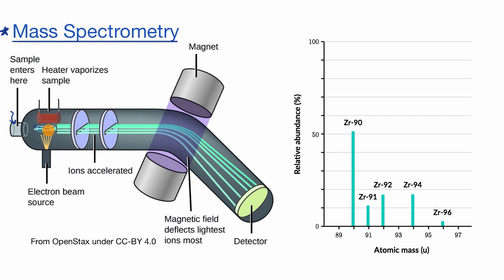And by ionizing some of your atoms, they now have charge. And because they have charge, they can be accelerated through these electric plates. So now you have these ions, in this case of zirconium, moving quite rapidly through this chamber.